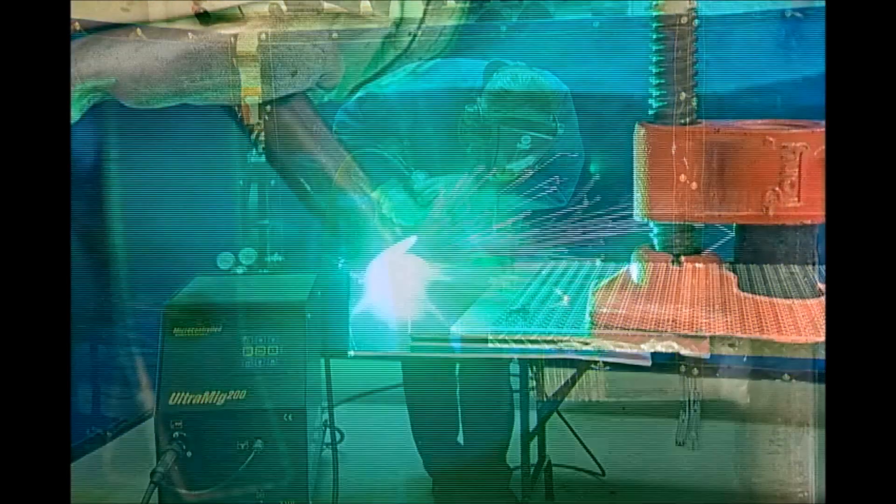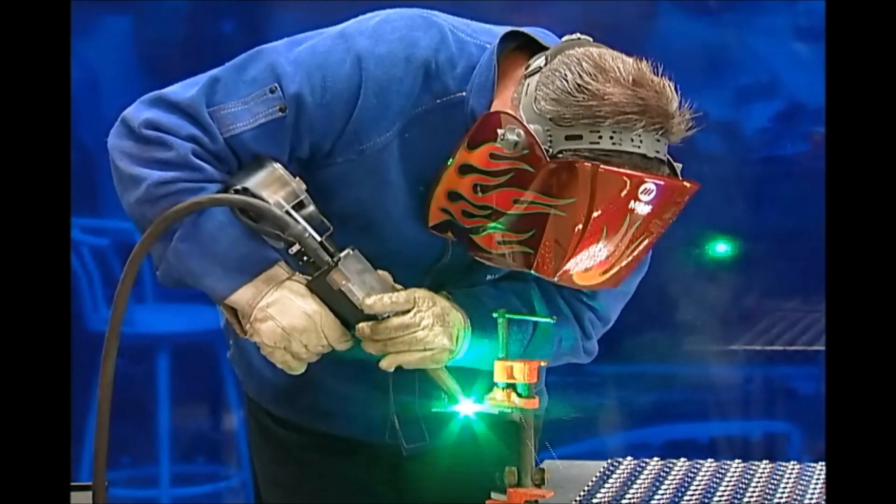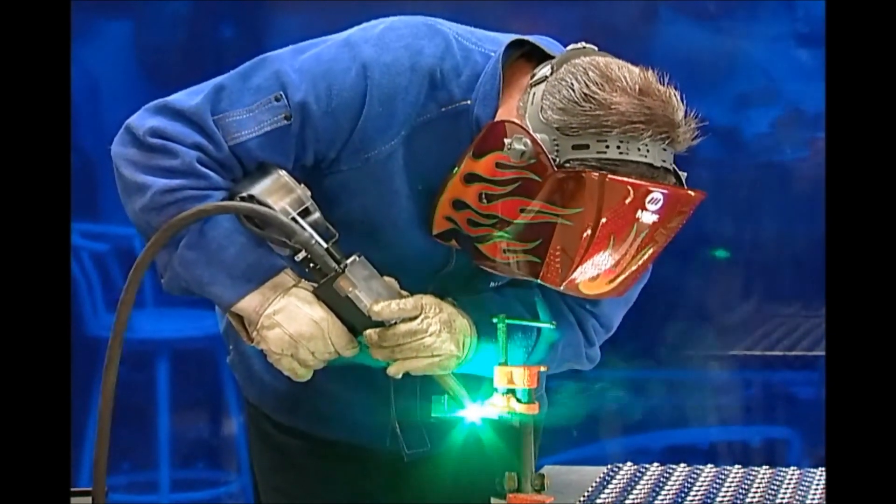The recommended direction for welding aluminum is to push the weld puddle. This keeps the shielding gas towards the front of the puddle and improves the cleaning action. Because aluminum is such a good conductor of heat, the weld speed may have to be increased slightly during the weld in order to maintain a consistent weld bead.